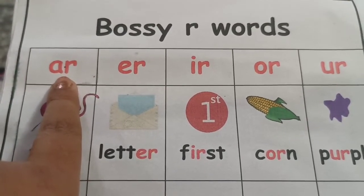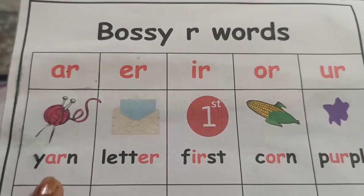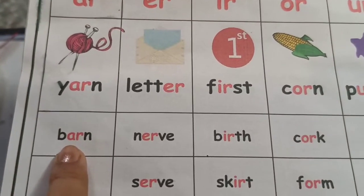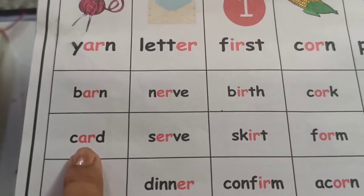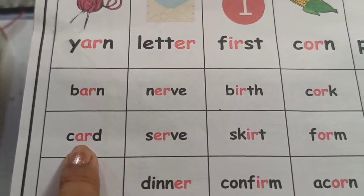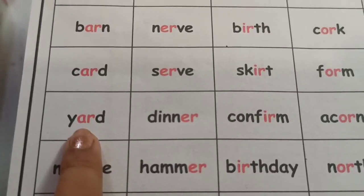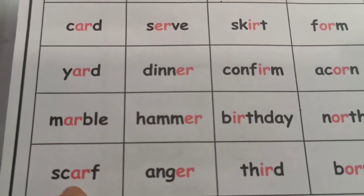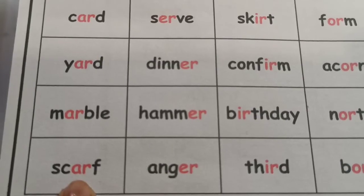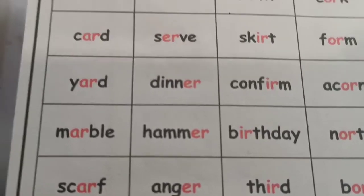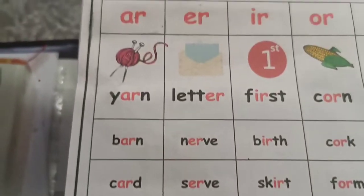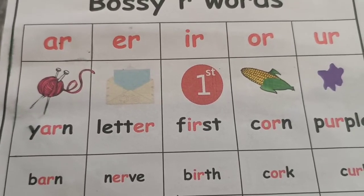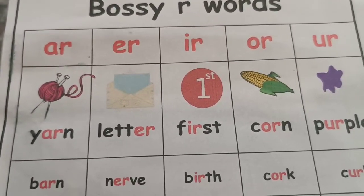Let's see some words with the A-R sound: yarn, barn, card, yard, marble, scarf. In all of these words, the R sound is kept louder and the A sound is kept low.